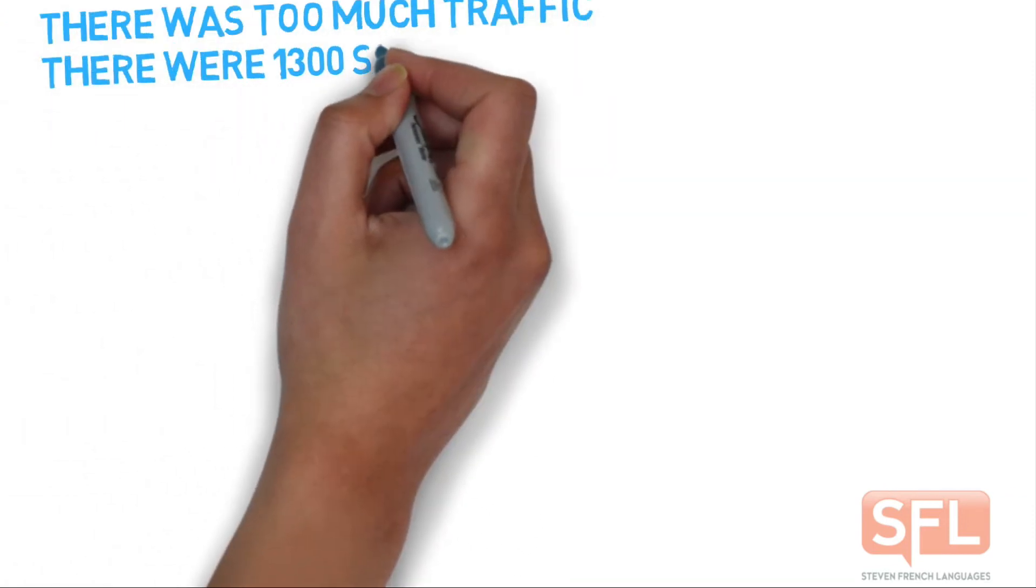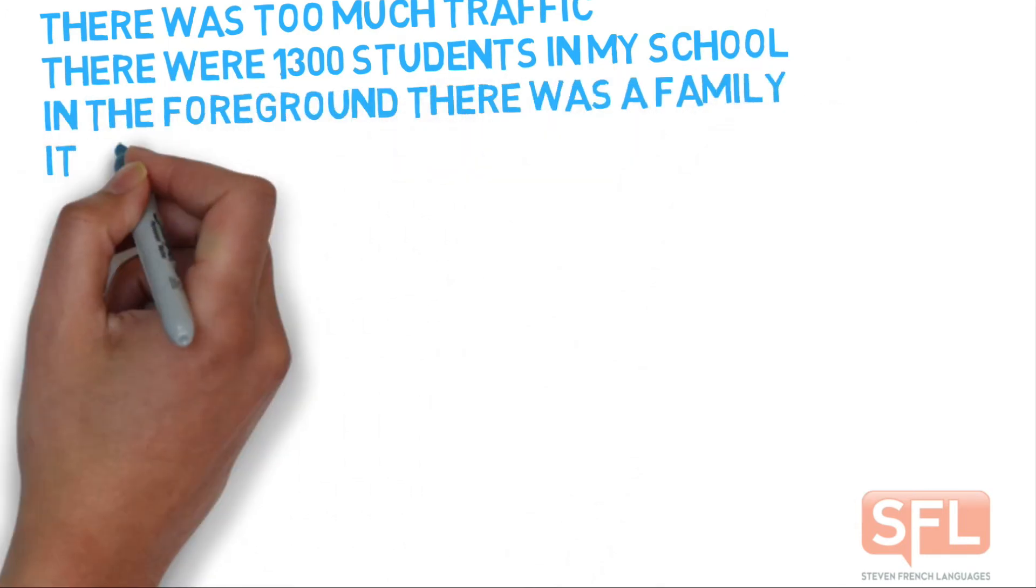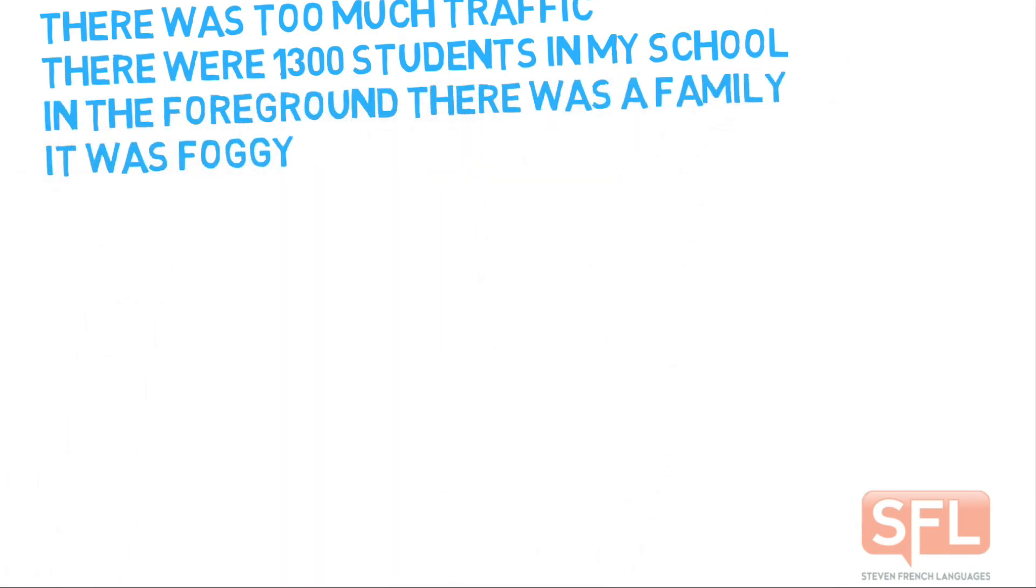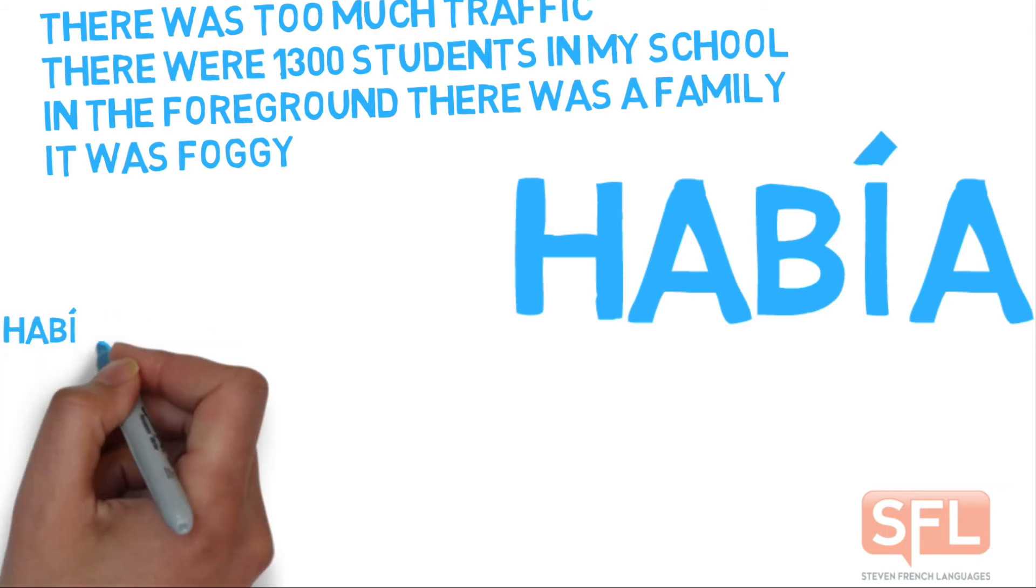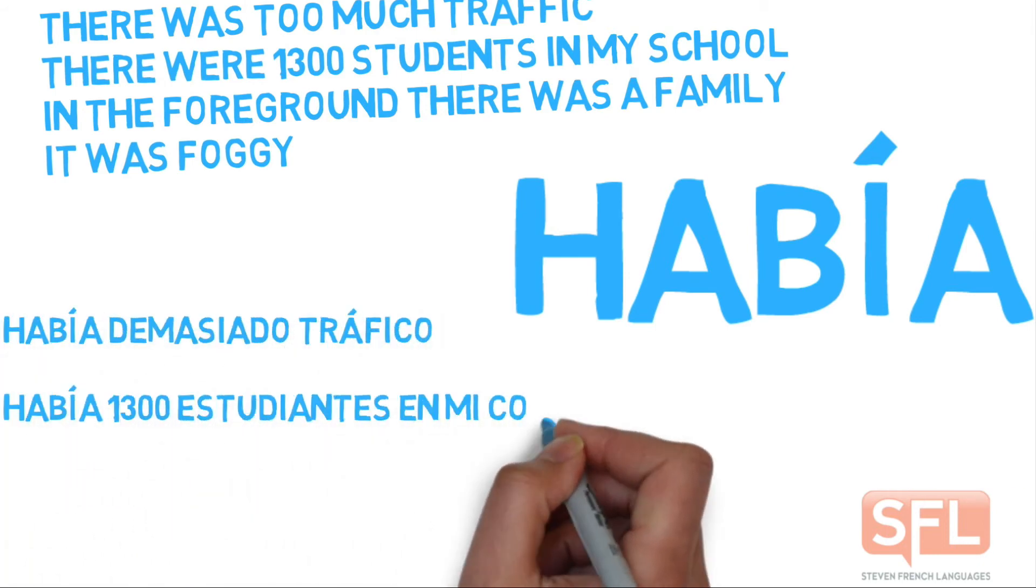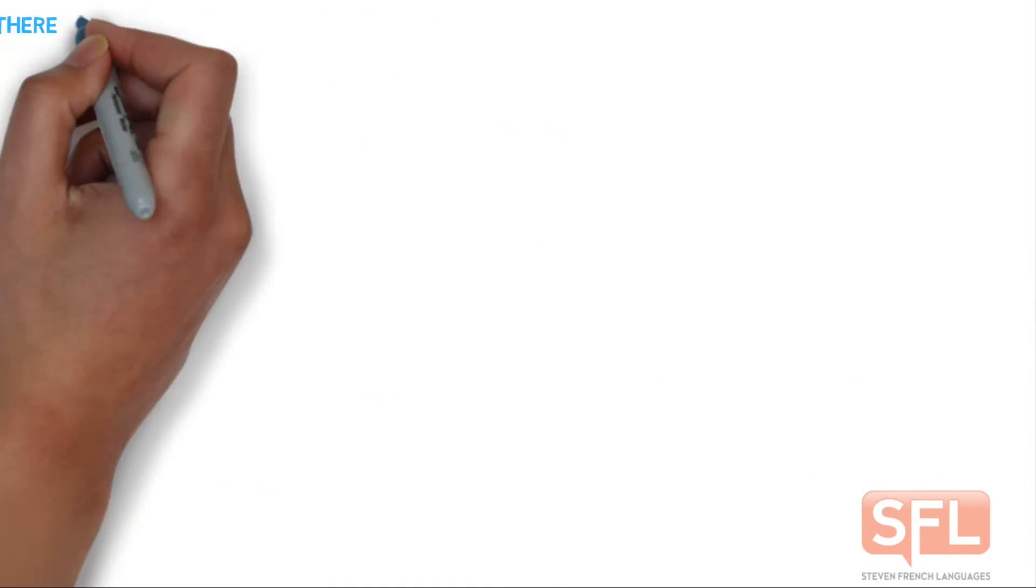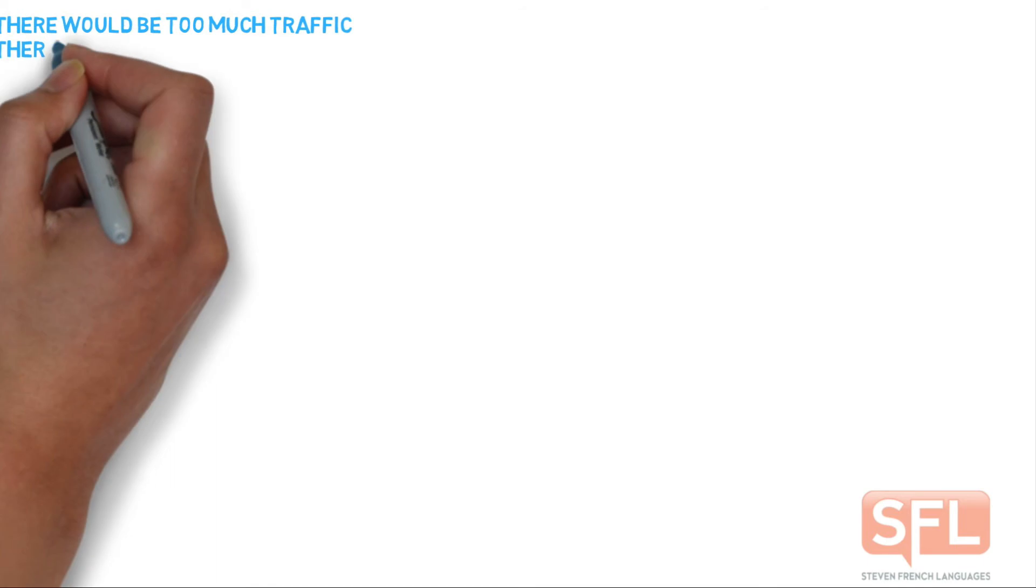Now we're looking at it in the imperfect tense. So we've got my sentences again. As you can see the same sentences all going up. And here it is in the imperfect. Say it after me. Había. Había. Había. Había. And había. So there was or there were había.